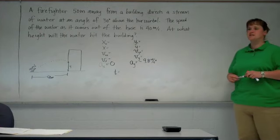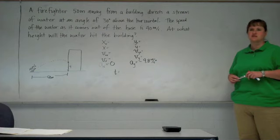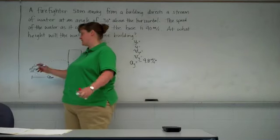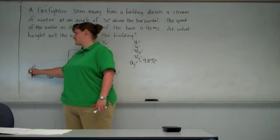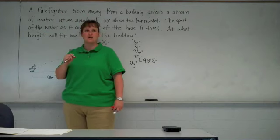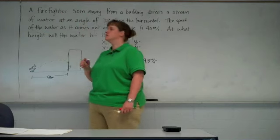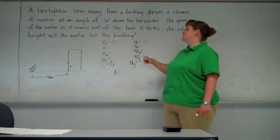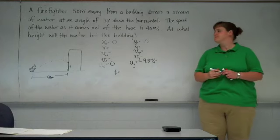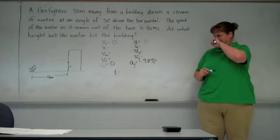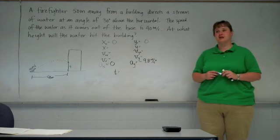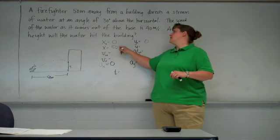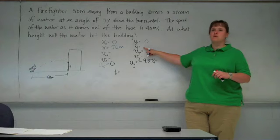Similar to the problems we've done before, we need to choose an origin. Some place to measure our position from. Let's go ahead and do it where it's starting. So, this is where it's coming out of the hose. The location is leaving the hose. Let's say that is the origin. That will make the initial x and the initial y both zero. We know the final x. How far does it end up horizontally? 50 meters. We're looking for the final y. That's what we want.